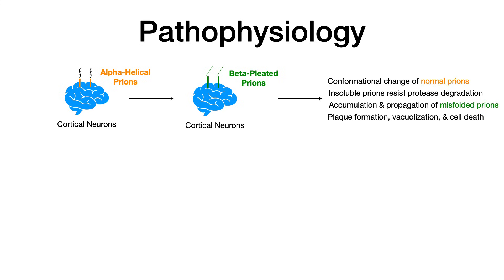Normal prions, which are alpha-helical shown in orange, get changed into beta-pleated sheets shown in green. This makes the prions insoluble, and when they're insoluble, they are resistant to proteases — in other words, they can't be broken down. Because they can't be broken down, they induce even more conformational changes in normal alpha-helical prions into these abnormally folded beta-pleated sheets.